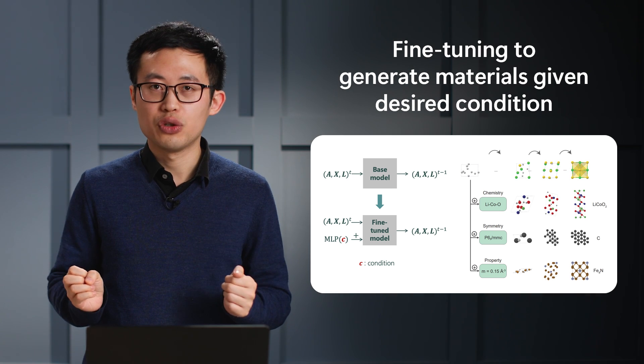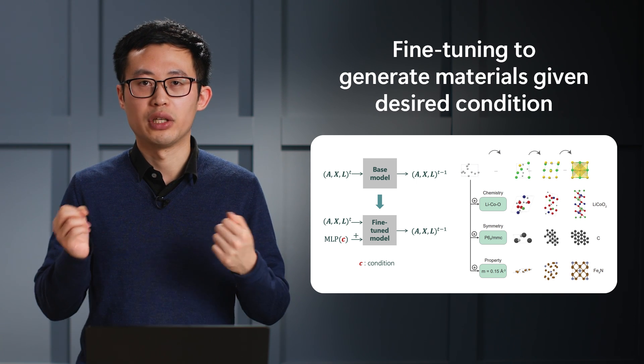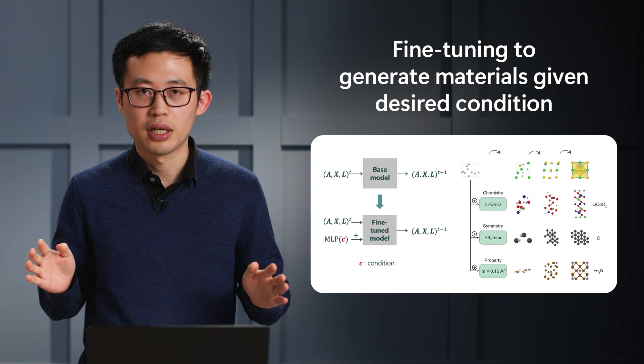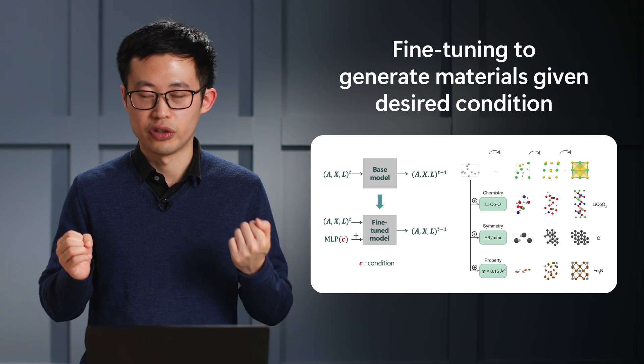Since we use fine-tuning, we only need a small labeled dataset to generate the materials given the corresponding condition, which is actually very useful for the users, because it's usually computationally expensive to generate a property-labeled dataset for materials.